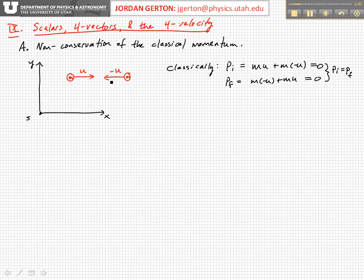This is the simplest kind of collision that you can imagine, and we're going to assume that this is a completely elastic collision. Classically, we know momentum is conserved. The initial momentum is equal to the mass times the velocity of the first particle. We're only considering motion in the X direction here so we can drop the vectors, but MU plus M times negative U, and of course those add up to zero.